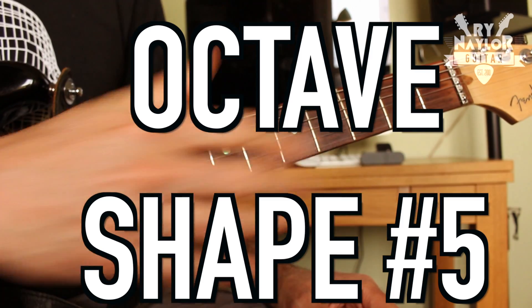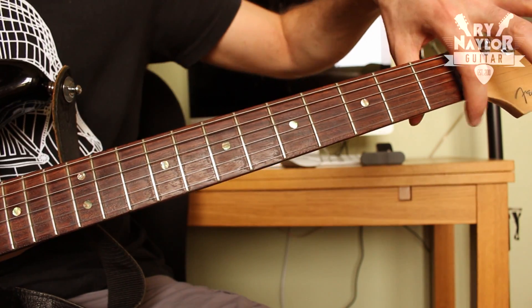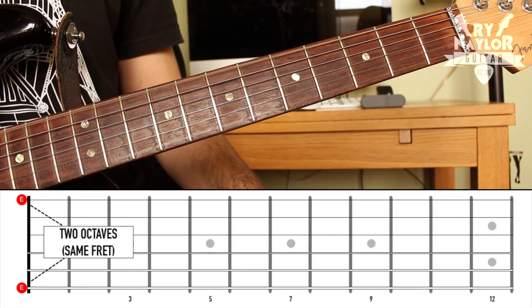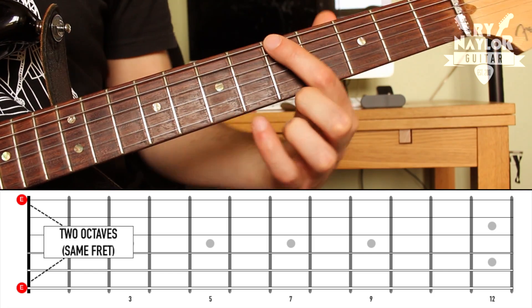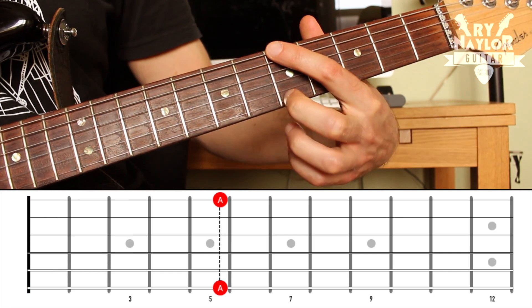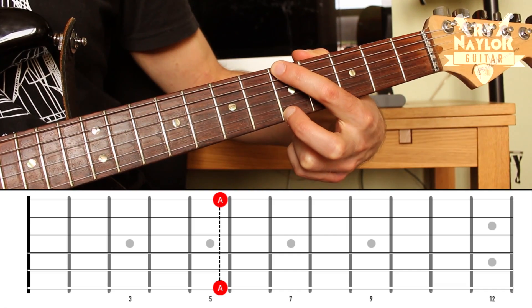Shape five. Two octaves. That occurs between the low E and the high E string. Those two open strings, that's two octaves. So any note that I play on the low E string, taking back to that A note, two octaves above will be on the fifth fret of the high E string.